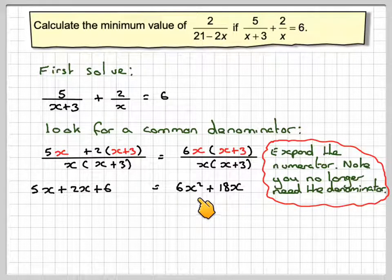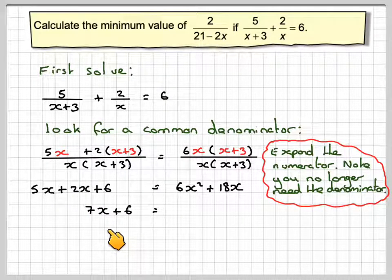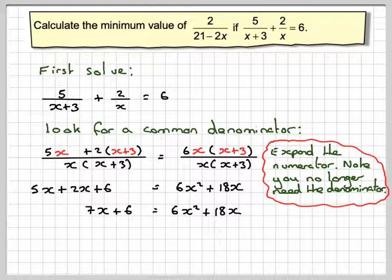In order to solve a quadratic, we need to put it equal to 0. So we'll just collect these two terms together. 5x plus 2x is 7x plus 6, which is equal to 6x squared plus 18x.